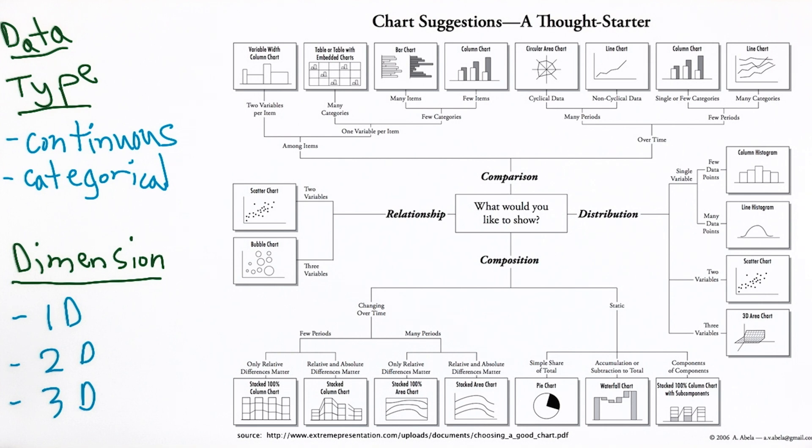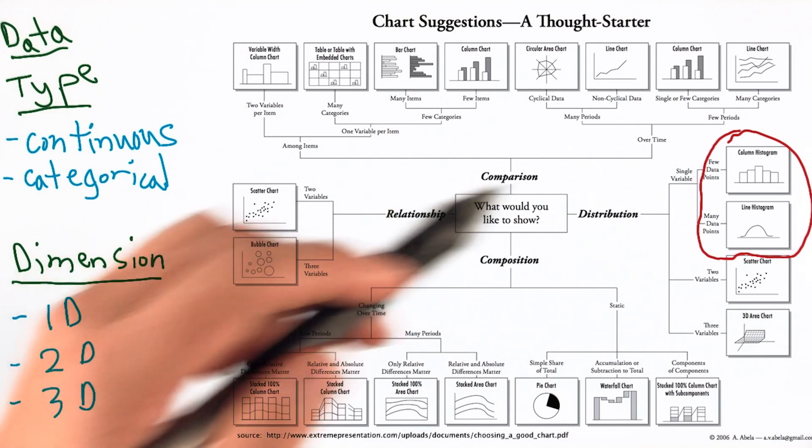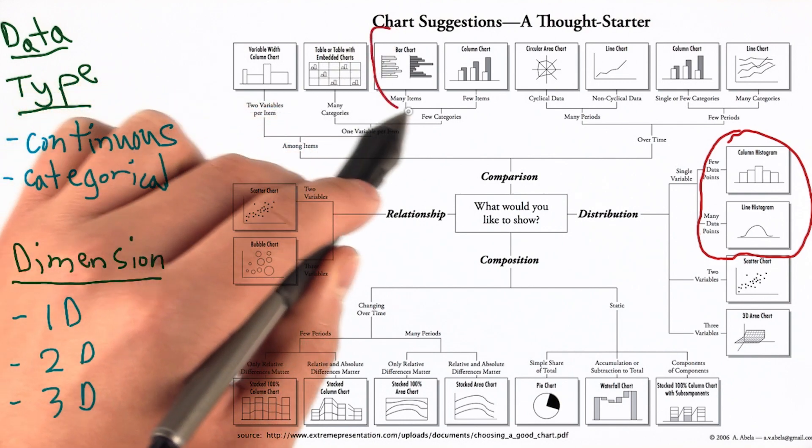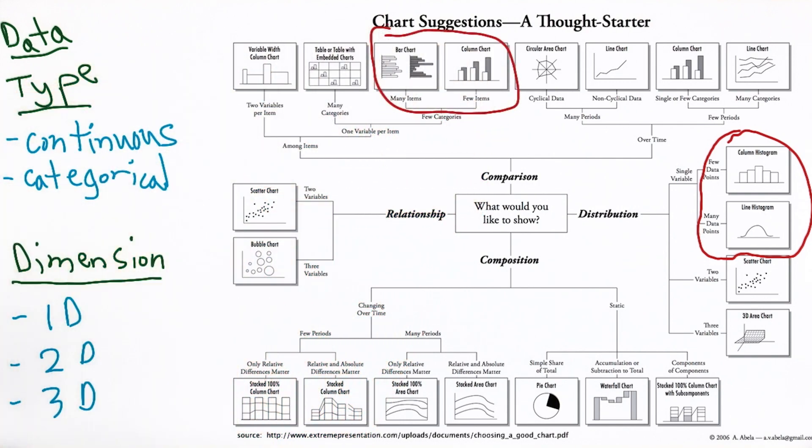Am I trying to compare two variables? Am I trying to show how one variable is distributed? Let's take that last question as a starting point. Let's say I have one dimensional data that I'm trying to see the distribution of. I would use either a histogram for continuous data, and I might possibly want to bin it, or a bar chart for categorical data.